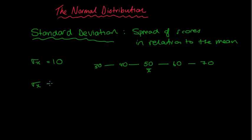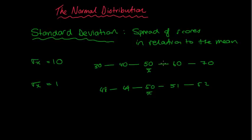Whereas if I have a standard deviation of just 1, let's have a look at what happens with the spread of scores. So you can see in the first example, where it had a big standard deviation, the scores are spread out between 30 and 70. Whereas with a standard deviation of just 1, they're spread out between 48 and 52 — they're much more bunched or grouped.